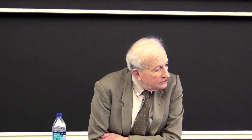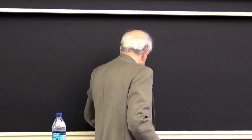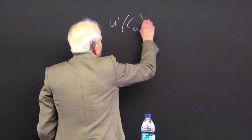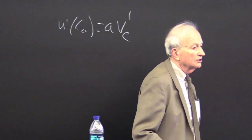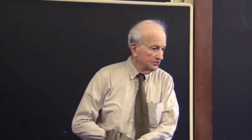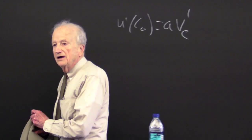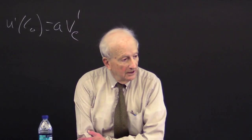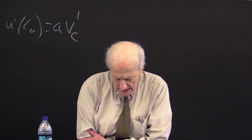The condition they would like to be in is U prime of CO equal to A times B prime of the child. The left-hand side is their marginal utility when they're old from additional consumption. The right-hand side is the marginal utility they get from additional consumption of their children. Think of V as a utility function of the children, and A — the discount — could be greater than one.